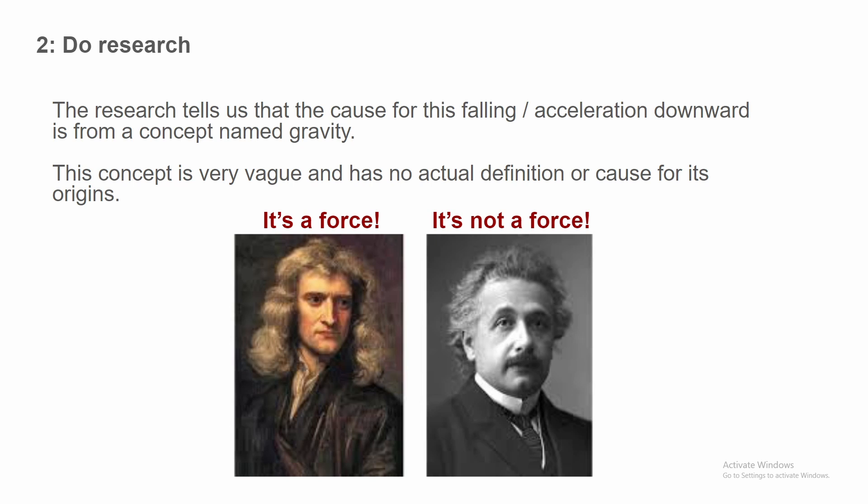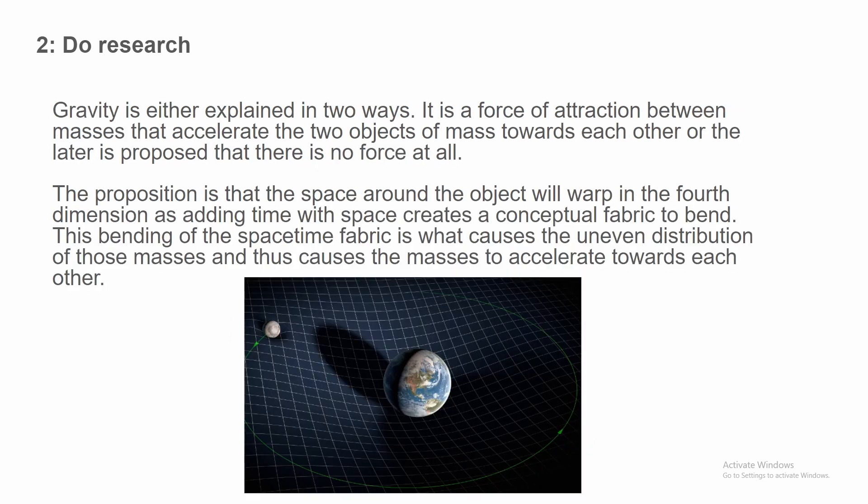Newtonian gravity? It's a force. And Einsteinian gravity? It's not a force. Weird as they both contradict one another but want to be used in the same pond. Gravity is either explained in two ways. It is a force of attraction between two masses that accelerate the objects of mass towards each other, or the latter, which is Einstein. It's proposed that there is no force at all. The proposition that the space around the object will warp in the fourth dimension as adding time with space creates a conceptual fabric to bend. This bending of the space-time fabric is what causes the uneven distribution of those masses and thus causes the masses to accelerate towards each other.